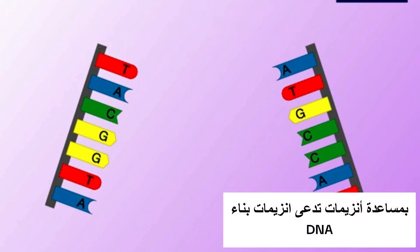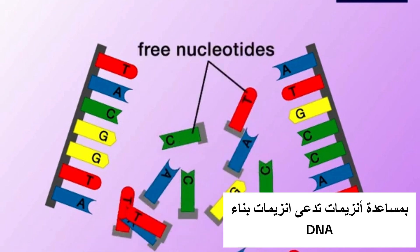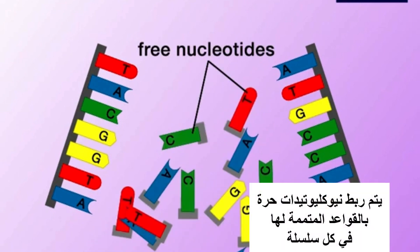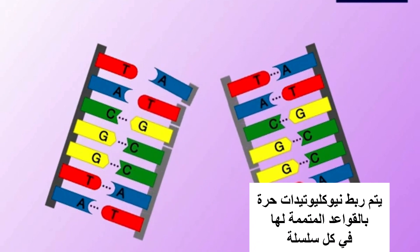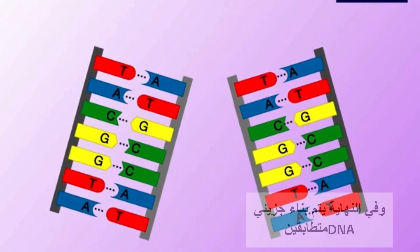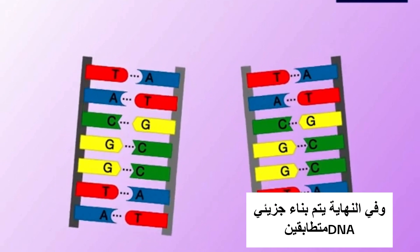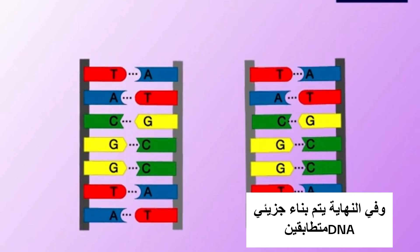Under the catalytic action of an enzyme called DNA polymerase, free nucleotides pair with the complementary nucleotides on each template. Finally, two identical DNA molecules are formed.